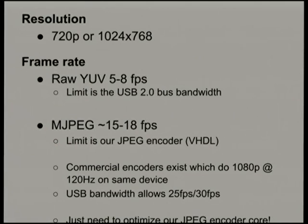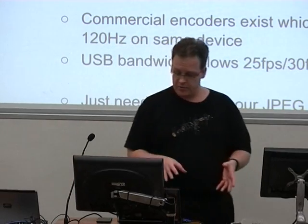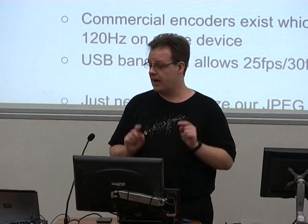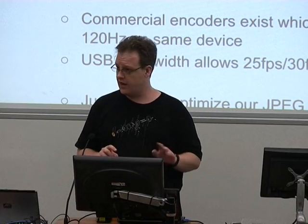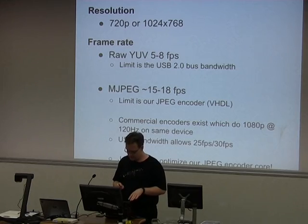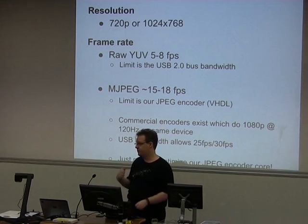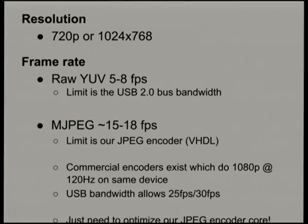The raw frame rate is limited by the USB bus, which only goes 480 megabits per second — you just can't ship raw frames at full speed. With MJPEG we currently do 15 to 18 frames per second, which is not a hardware limitation. We could easily do 25 to 30 frames per second on the USB bandwidth; we just need to fix our JPEG encoder, which is just a firmware update. That would give full 720p capture at 25 or 30 frames per second.